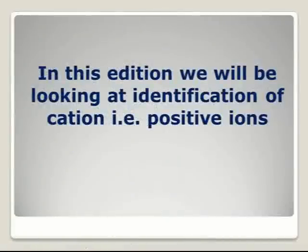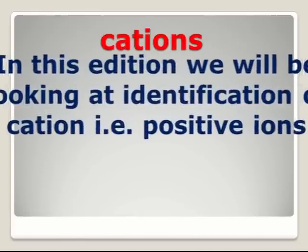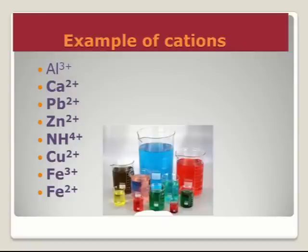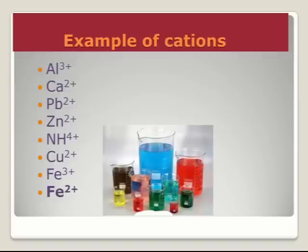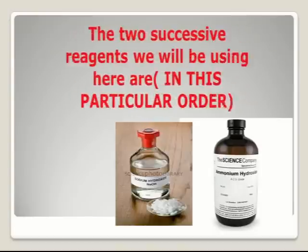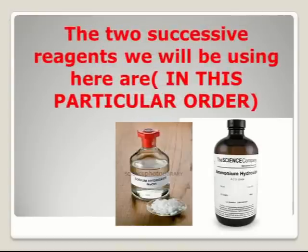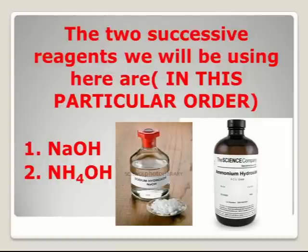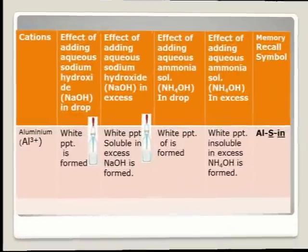In this edition, we will be looking at identification of cations, i.e., positive ions. Examples of cations we will be looking at are aluminum, calcium, lead, zinc, ammonium, copper, iron-3, and iron-2. The two successive reagents we will be using, in this particular order, are: one — sodium hydroxide, and two — ammonium hydroxide. We will first use sodium hydroxide followed by ammonium hydroxide.